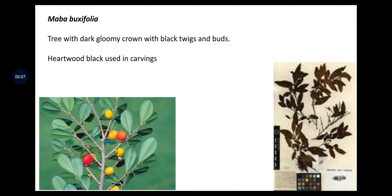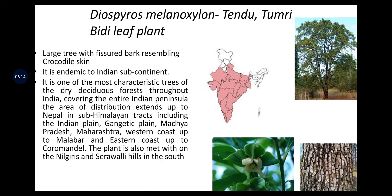Maba buxifolia is a tree with dark gloomy crown with black twigs and buds; heartwood black, used in carvings. Diospyros melanoxylon is tendu or tumri, the bidi leaf plant. It is a large tree with fissured bark resembling crocodile skin, endemic to the Indian subcontinent. It is one of the most characteristic trees of the dry deciduous forests throughout India, distributed across the entire Indian peninsula, extending up to Nepal in sub-Himalayan tracts including the Indian plains, Gangetic plains, Madhya Pradesh, Maharashtra, western coast up to Malabar, eastern coast up to Koromandel, Nilgiris and Shevaroy hills in the south.